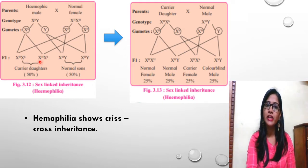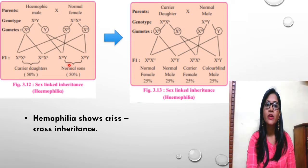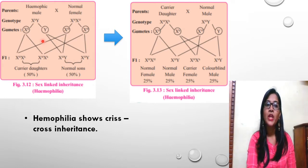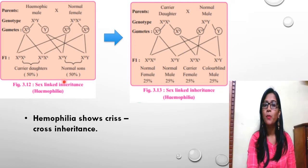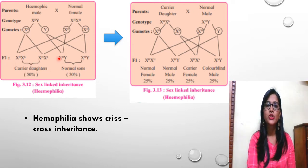Another combination also gives carrier daughters. In case of sons, when the Y sperm fertilizes the X ovum, there is 50% chance of normal sons formed in the F1 progeny. These sons are normal as their X chromosome carries capital H. So this carrier daughter carries the X with small h.